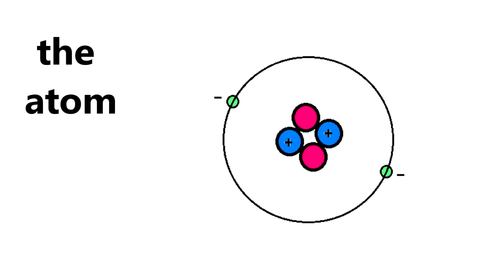Atoms are made of three smaller things: protons, neutrons, and electrons.